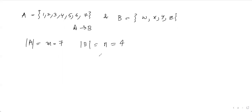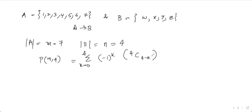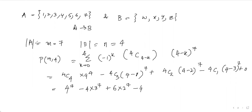Here mod A, which is m, has seven elements and mod B, which is n, has four elements. So we compute P of seven comma four, which is a summation from k equals zero to three. Solving this further, the answer is 8400.